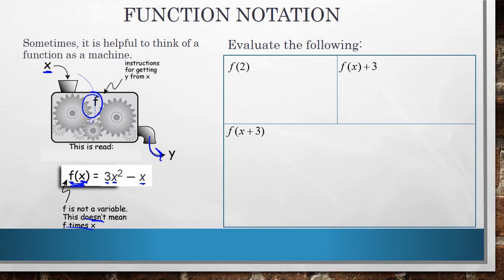So when we get into function notation, when you see things like f of 2, what that's meaning is to go to your function, and anywhere you see an x value, you're replacing that x value with this 2. So when I do that, I go to my function. Anywhere I see an x, I replace it with a 2.